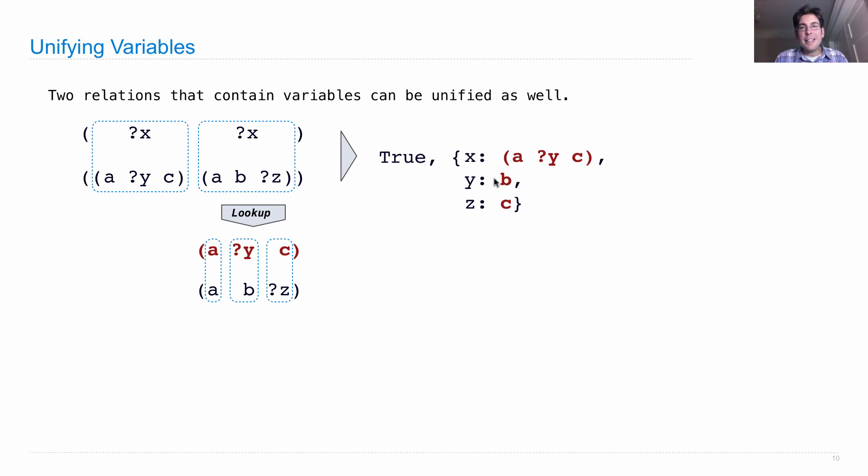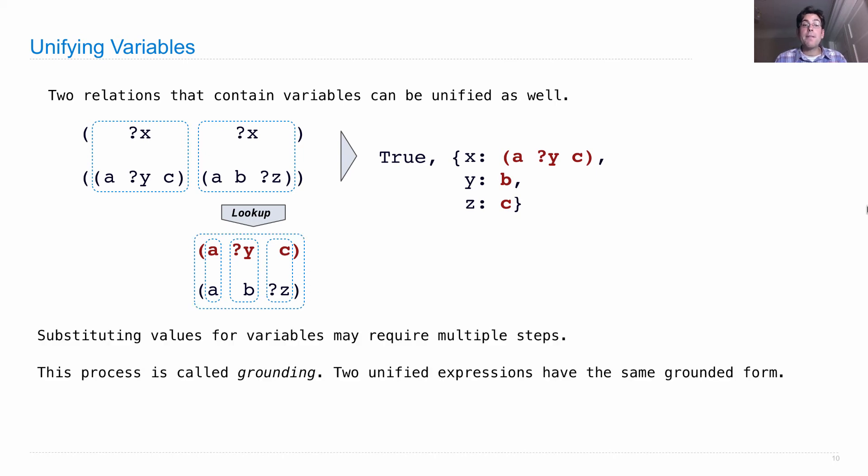Now the annoying thing is that x isn't really defined as what it is. So x should be a b c, but instead it's defined as a something c where that something is b. So substituting values for variables may require multiple steps. We get an environment that looks like this, and then we have to go through and figure out what x is by figuring out what all of its parts are. And this is a process called grounding.